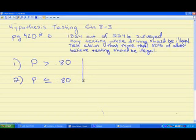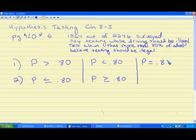But just as an example, if the original claim was people believe that less than 80% of adults believe that texting should be illegal, then the opposite of the claim would be P greater than or equal to .80. This is the opposite. Greater than or equal to is the opposite of less than. You can also use an equality. So let's say somebody claimed that P equals 80%. Well, the opposite of equals would be P not equal 80%. This is the opposite of that.